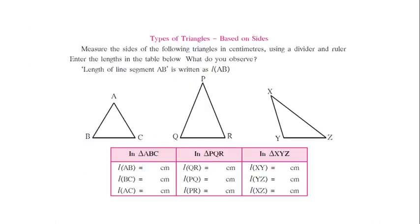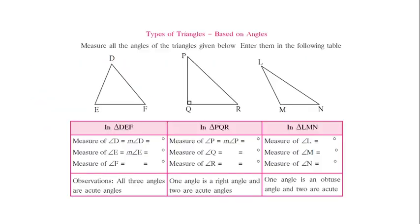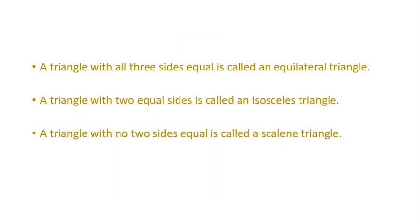Secondly, we have studied the types of triangles based on sides and also types of triangles based on angles. Under types of triangles based on sides, we have learned three different types: an equilateral triangle, an isosceles triangle, and a scalene triangle.